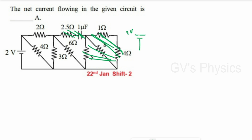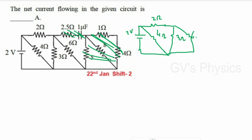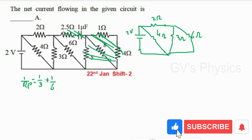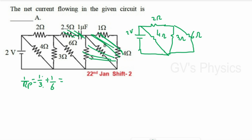After neglecting the capacitor branches, we have a 2 ohm battery, a 2 ohm resistance on the upper path, a 4 ohm resistance along the diagonal, and a 3 ohm in parallel with 6 ohm. For the parallel combination of 3 ohm and 6 ohm: 1/Rp = 1/3 + 1/6 = 3/6 = 1/2, so Rp = 2 ohm.